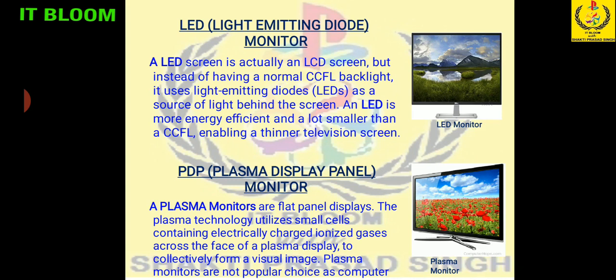Next type of monitor is PDP — plasma display panel monitor. A plasma monitor is a flat panel display. The plasma technology utilizes small cells containing electrically charged ionized gases across the plasma display to collectively form visual images. Plasma monitors are not a popular choice as computer monitors because of their expense, weight, power consumption, and size. They are normally used in TVs and are not available in small sizes.